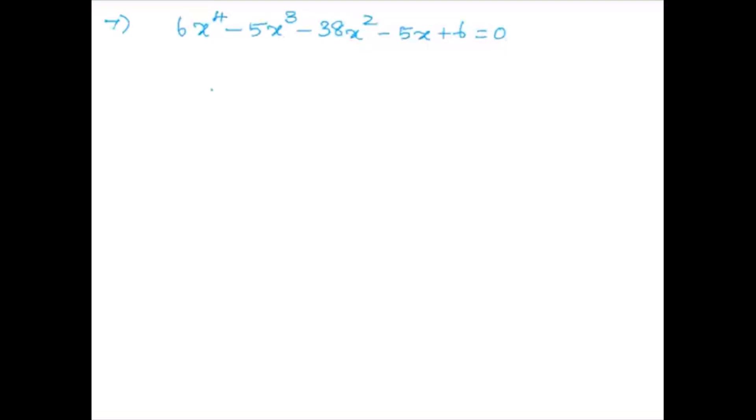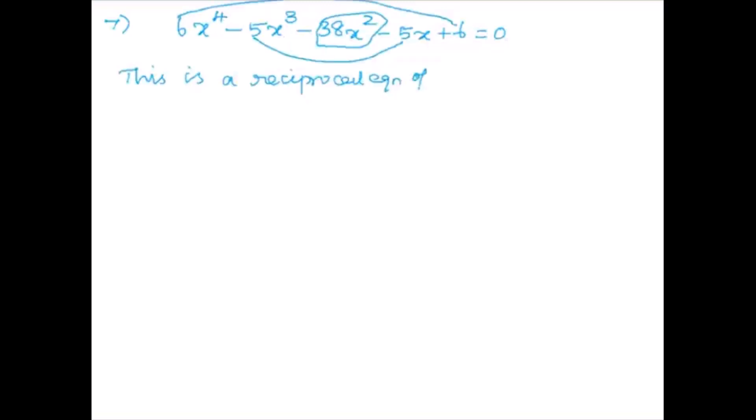This is a polynomial equation. Is it a reciprocal equation or not? To identify: the first number is 6 and the last number is plus 6, and minus 5 here and minus 5. The middle term is 38x². Therefore this is a reciprocal equation of even degree — type one, because the middle term is not equal to zero.